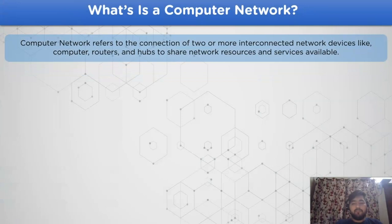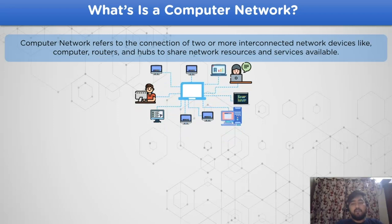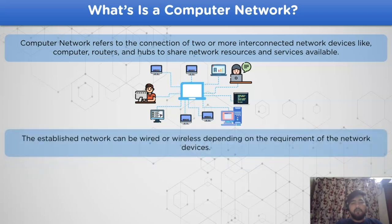A computer network refers to a group of networking devices — for example, computer systems, switches, routers, or hubs — connected to each other through a central unit to share hardware resources and information services. The mode to connect different devices can be based on wired or wireless medium, depending on the requirement of the user and the availability of network channels.